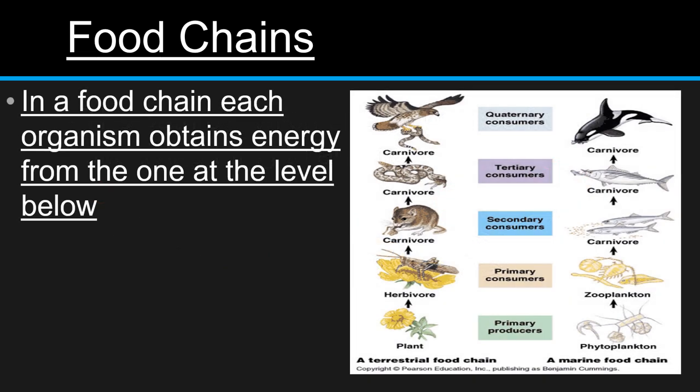In a food chain, each organism obtains energy from the one at the level below it. In our next video, we'll talk about energy pyramids. All the organisms down here are going to pass their energy to the next level, followed by the next level, followed by the next level. And we give these levels different names.